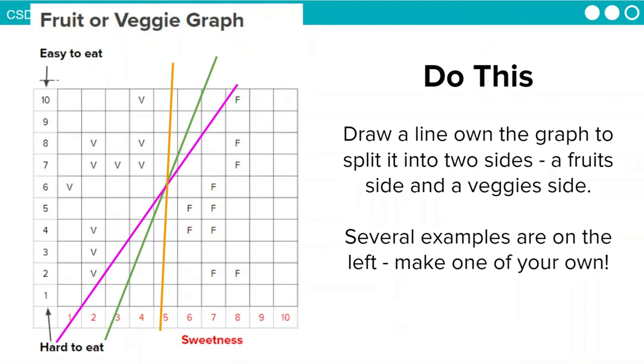Here are some examples of where you might draw your lines. You can see some of them are more straight up and down or slightly slanted, but all of them divide the graph into two halves: the fruit side and the veggie side.